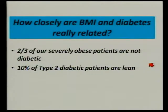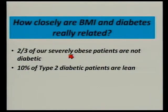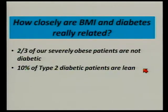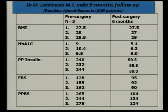And then the real question is, how closely are BMI and diabetes really associated? Is there really a cause and effect relationship? If so, why are only one-third of our patients who are severely obese diabetic? And even the bigger question: why are 10% of the diabetic patients lean? It's not a cause and effect relationship.